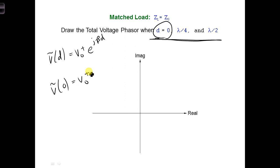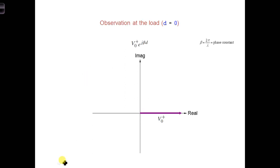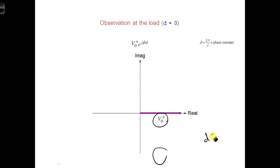So the angle is zero and the phasor overlaps the real axis. And you can see that here — it has an amplitude of V naught plus, and it's along the real axis. Now, draw the total voltage phasor at D equals lambda over 4.